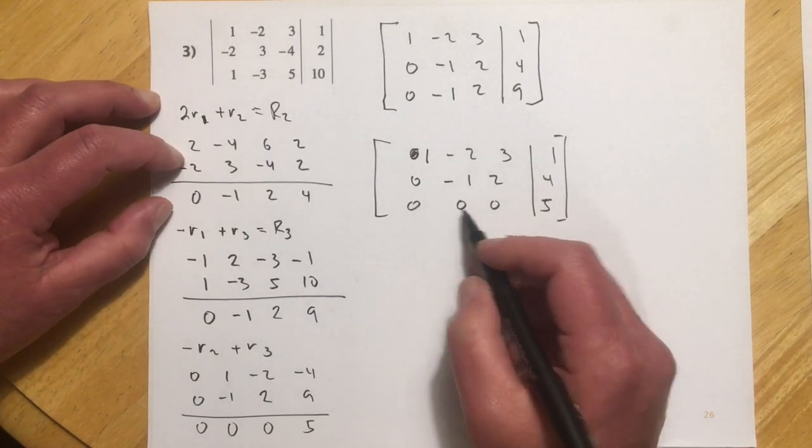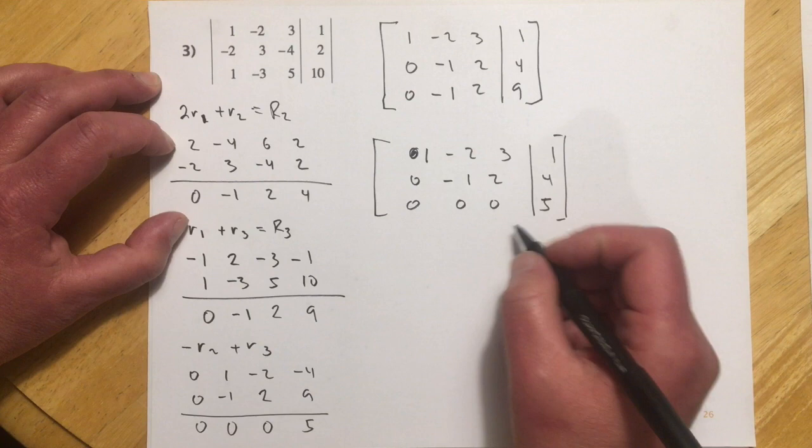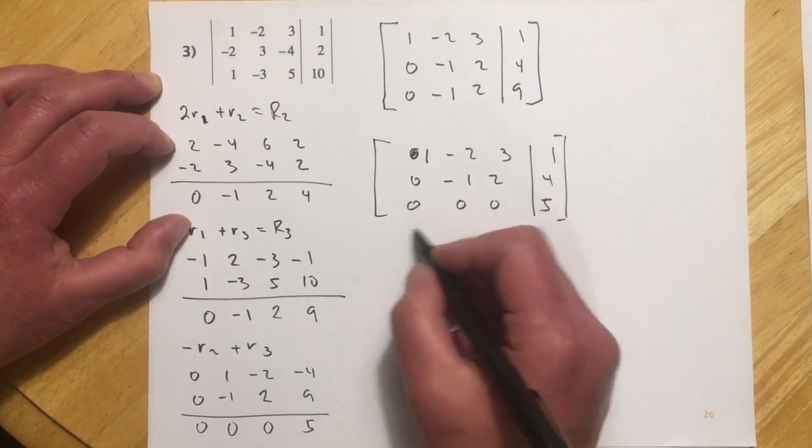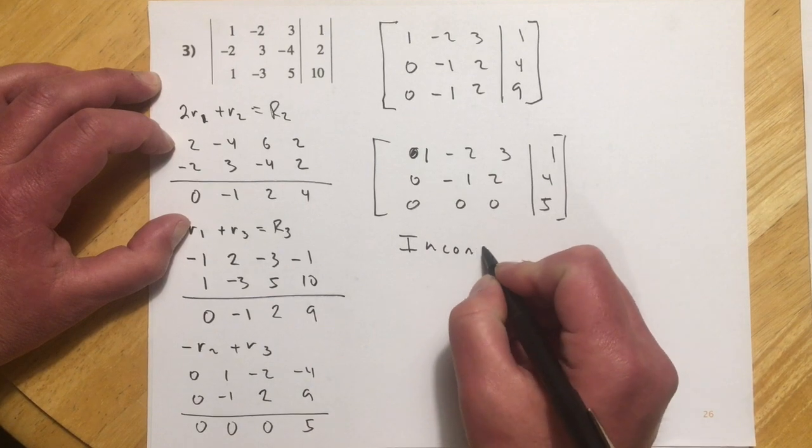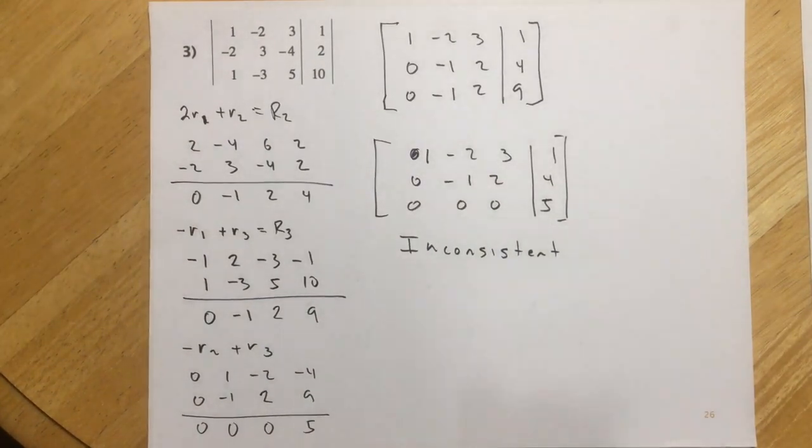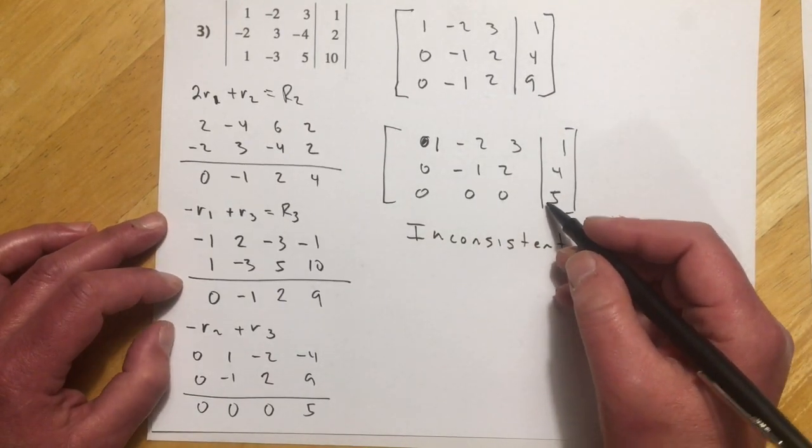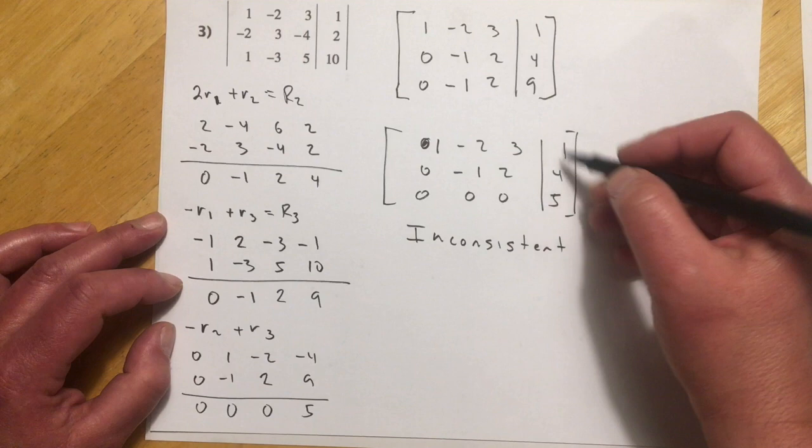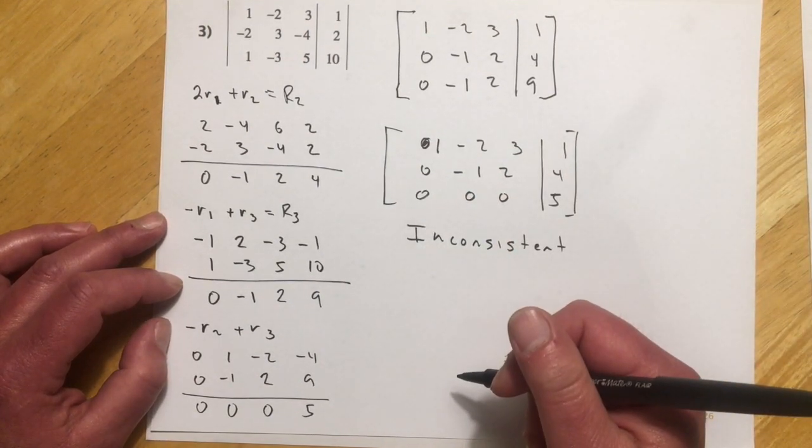And so what this means is 0x's, 0y's, and 0z's make 5. And that can't actually happen, because you'd have to have something over here. So this is what they would look like if they were inconsistent. So that's that no solution version. A dependent system would come out all zeros on the bottom row. I'll do another example with just that. But so that's kind of how they look for the two exception cases. Cool. And that wraps up 9.6.